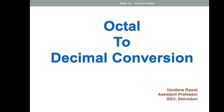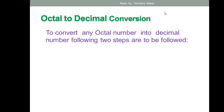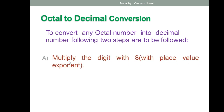After multiplication you add all those results to get the decimal answer. Same way, today I'm going to show how to convert an octal number into decimal. There are two steps to follow: first, multiply the given octal number with 8 to the power 0, 8 to the power 1, 8 to the power 2, and so on respectively.